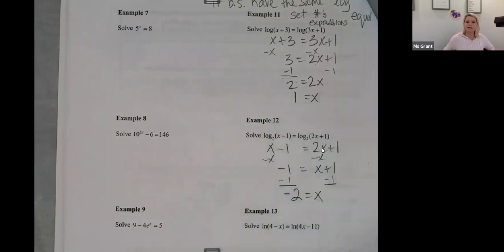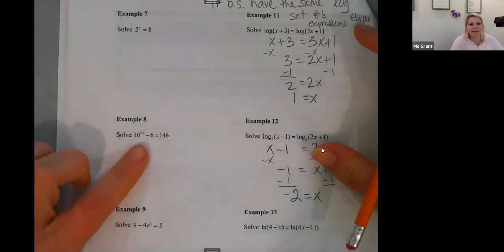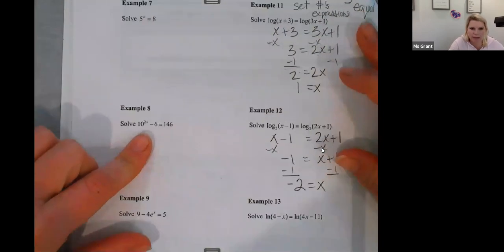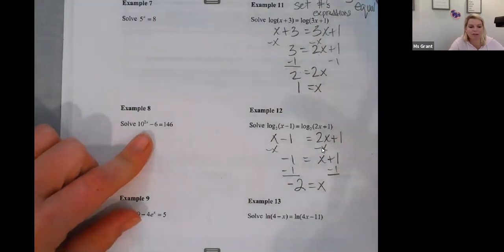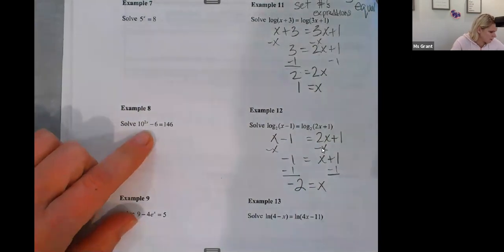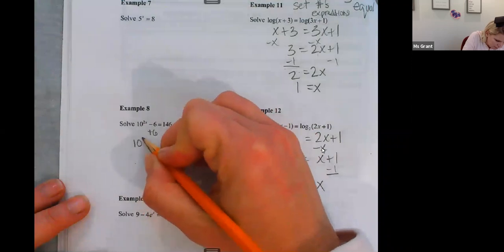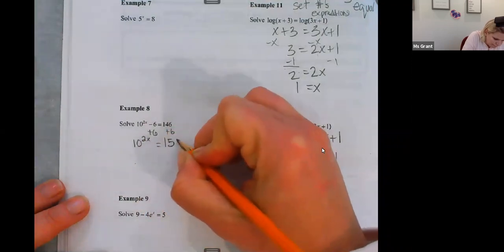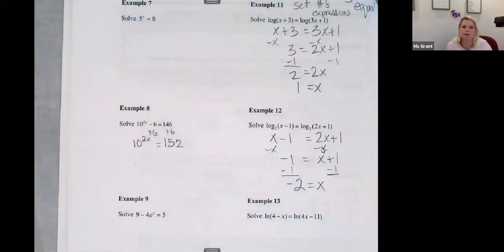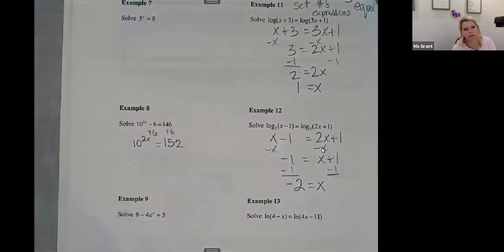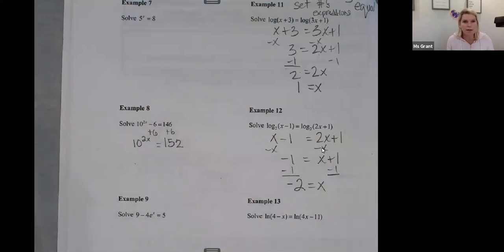Okay, number eight is a little bit more difficult. So on number eight, what I'm going to do is I'm going to isolate my 10 to the power of 2x. I'm going to move the six over, but then I'm going to take the logarithm of both sides. So let me first add six. And I'm going to explain this super well. Okay. 10 raised to the power of two x equals 152. Now, I can't solve for that. I can't like do anything.